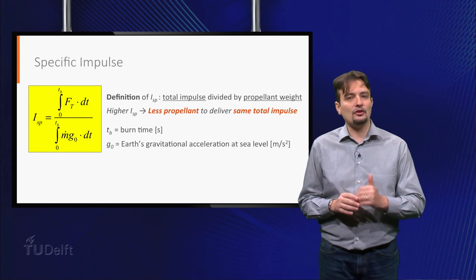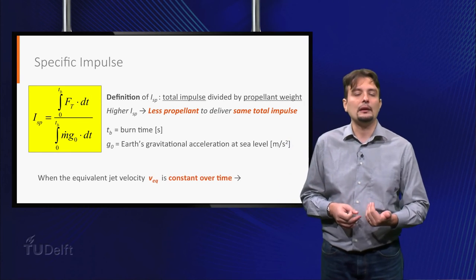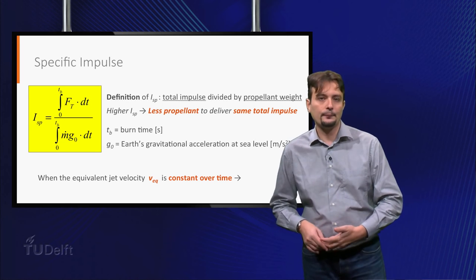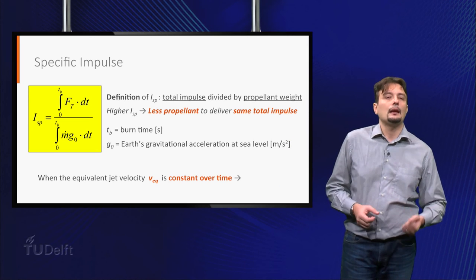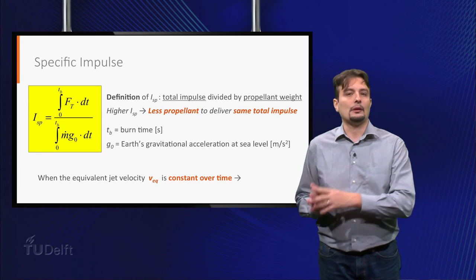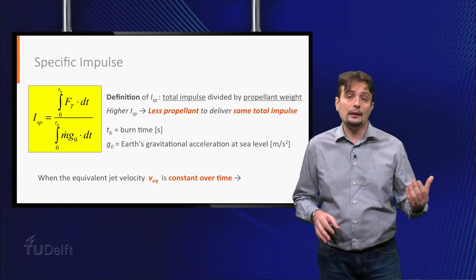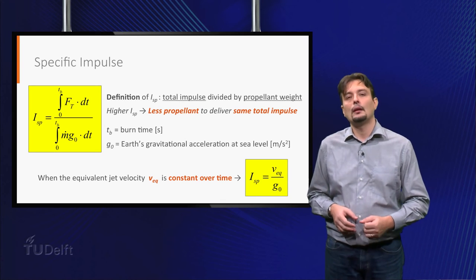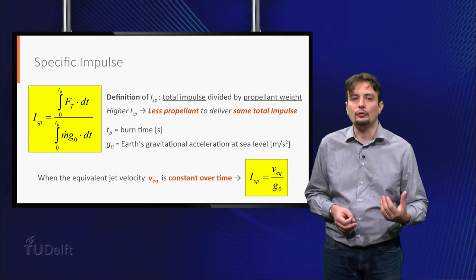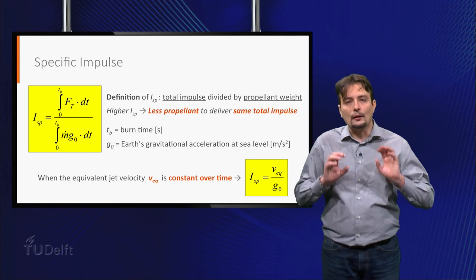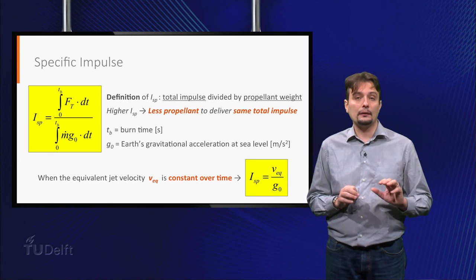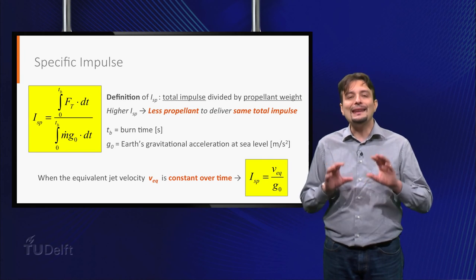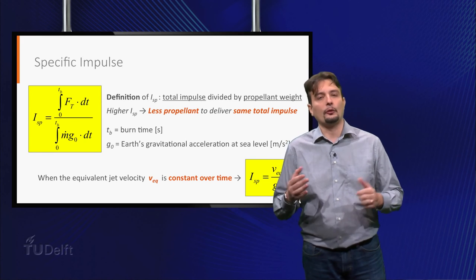This equation can be written in a much simpler way, if the equivalent jet velocity is constant over time, which is true, as we will see, in many cases of practical interest. In this case, recalling that the thrust is simply mass flow rate times equivalent jet velocity, the specific impulse is simply equal to the equivalent jet velocity divided by the gravitational acceleration. Remember that the gravitational acceleration used to calculate the specific impulse is always the value on Earth at sea level, equal to about 9.8 meters per second squared, independently on the place where the rocket or spacecraft is flying.